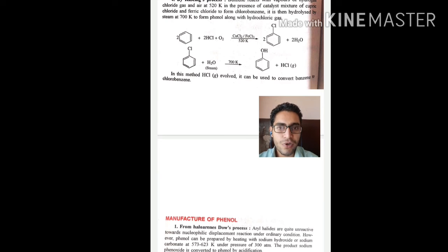By Raschig process, benzene reacts with the vapors of hydrogen chloride gas and air at 520 Kelvin in the presence of a catalyst mixture of cupric chloride and ferric chloride, giving us chlorobenzene, which when hydrolyzed by steam gives us phenol along with hydrochloric acid.